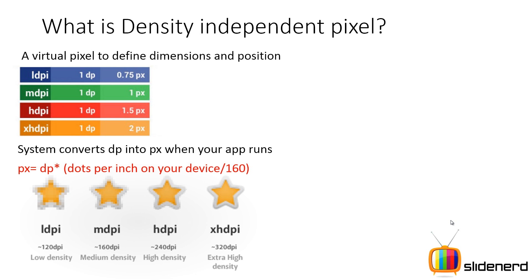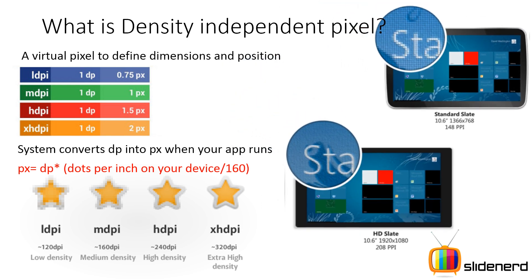For example on an LDPI device, 100 DP equals 100 × 120 / 160. For a 160 DPI device the number of pixels and DP match exactly. For HDPI it is 1.5 times and for XHDPI it is 2 times. Looking at two devices — one at 148 DPI and one at 208 DPI — the UI controls look the same size on both because the units are specified in device independent pixels. Android automatically applies the correct scaling factor.